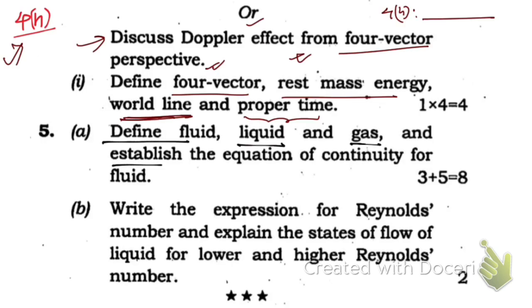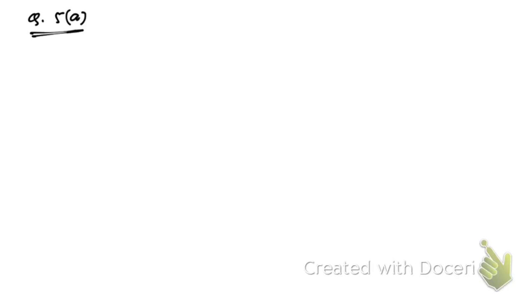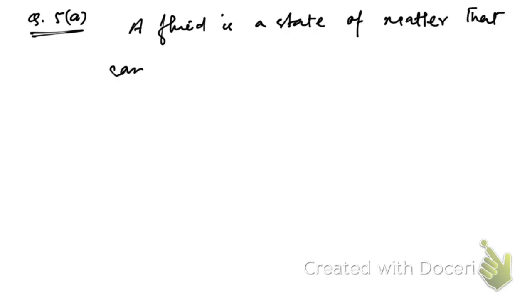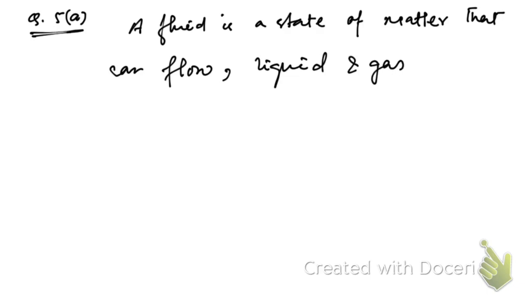Now, question number 5a: define fluid, liquid, and gas, and establish the equation of continuity for fluid. A fluid is anything that can flow — it may be a gas or liquid. A fluid is a state of matter that can flow. Both liquid and gas are fluids.